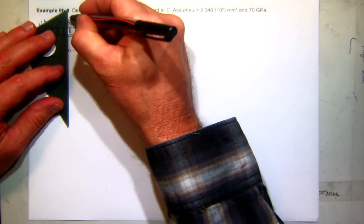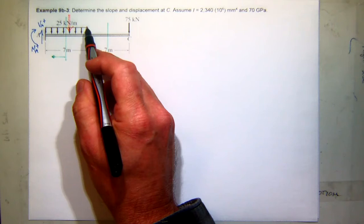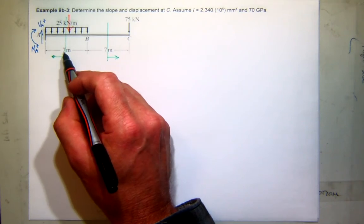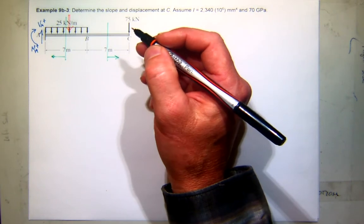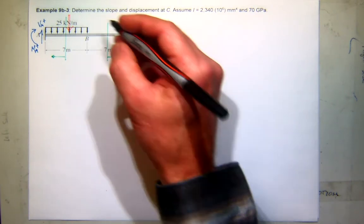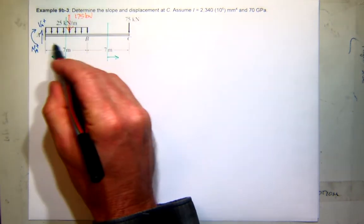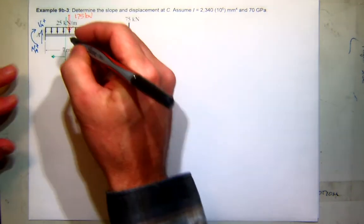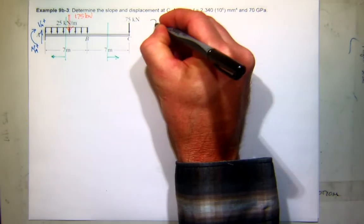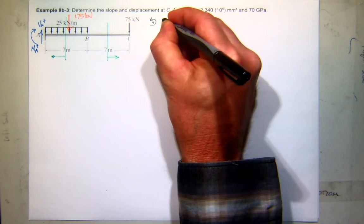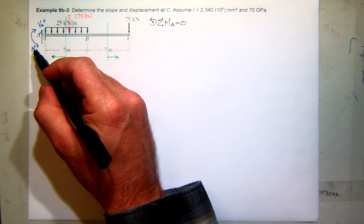All right, so at A, we'll need the reactions at A, so I'll need the shear at A, and I'll draw that as a positive value, and the moment at A, and there's the positive direction for that. We will need the concentrated equivalent force for that area. Its rectangles will be base times height, which is 7 meters times 25 kilonewtons per meter, which is 175 kilonewtons.